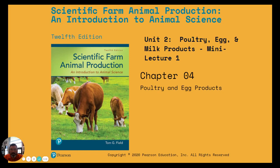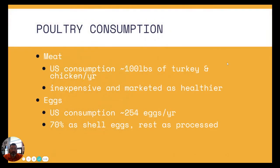Hello there, everyone. It's good to see you again. This is Unit 2 of Animal Science, where we're going to talk about poultry, egg, and milk products. This is mini-lecture 1. We'll divide this into two segments to make it a little bit easier listening. In Chapter 4, which corresponds to your textbook, we're going to talk quickly about poultry and egg products.